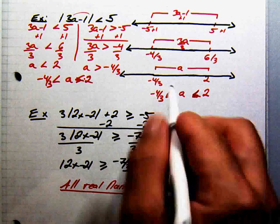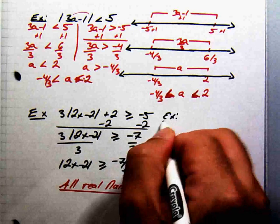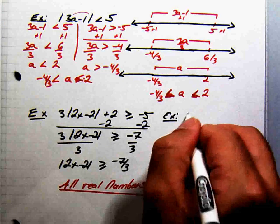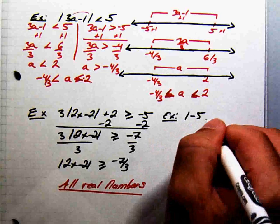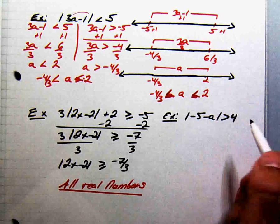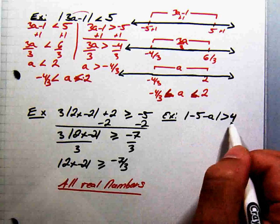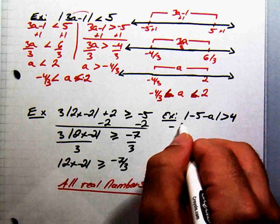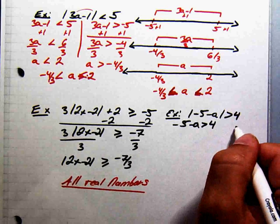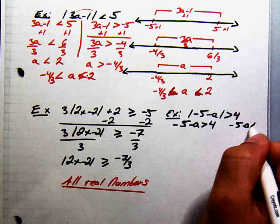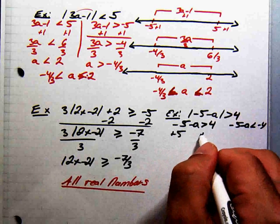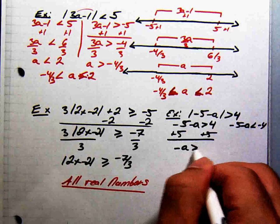Let's take a look at one more type of problem: the absolute value of negative 5 minus a is greater than 4. There's nothing to clear away from outside the absolute value bars, so we split into two separate inequalities: negative 5 minus a is greater than 4, and negative 5 minus a is less than negative 4. Adding 5 to both sides of the first gives negative a is greater than 9.